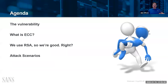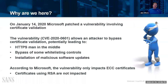Quick agenda: what is the vulnerability? It impacts ECC — many folks don't know what that is. Several clients yesterday asked if they're safe because they use RSA certificates, and the short answer is no. We'll walk through attack scenarios and how this could actually be exploited. Yesterday, Microsoft patched CVE-2020-0601, which allows an attacker to bypass certificate validation, potentially leading to HTTPS man-in-the-middle attacks and bypass of whitelisting controls.